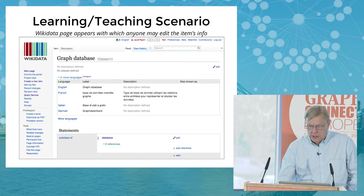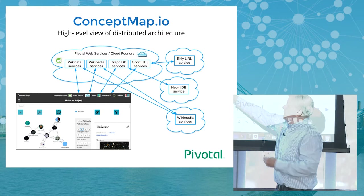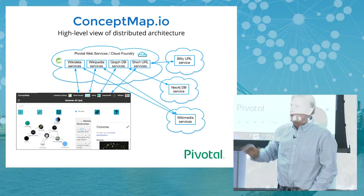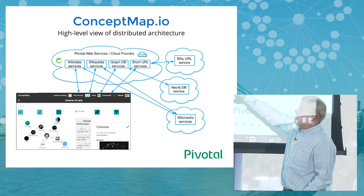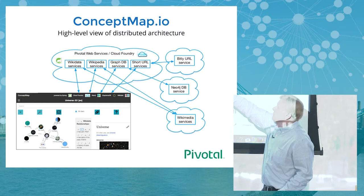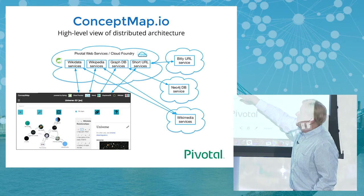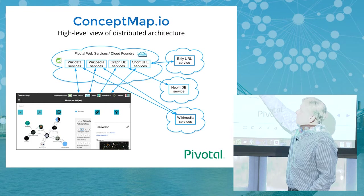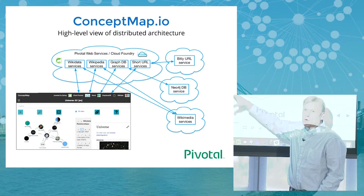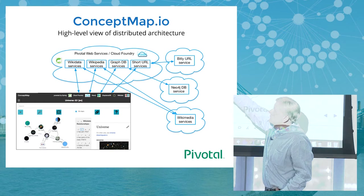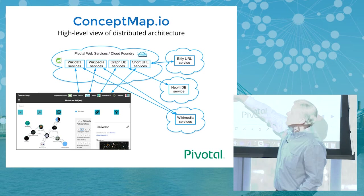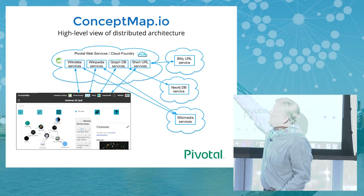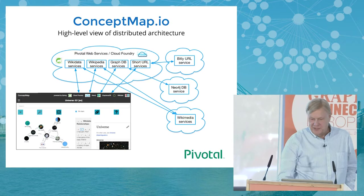Now I'd like to go to an architectural view. We have a single-page HTML5 app, and then some microservices running in the cloud grouped into four major categories: Wikidata services, Wikipedia services, graph DB services (proxied over to a Neo4j DB), and short URL services for the bit.ly link. These are edge services in the same domain as the HTML5 app to avoid cross-origin problems. There are around 20 microservices that front-end these services, providing simplicity and location independence.